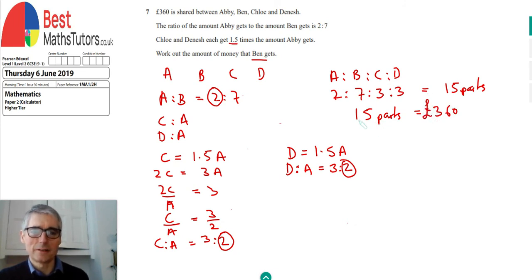And we can then find out what one part is worth, because that's always the key, to find out what one part is worth first. So we find one part by dividing both sides by 15, so that the 15 disappears on the left-hand side. And we get 360 divided by 15, which is 24. So it's a calculator paper, so you can just do that on the calculator. 360 divided by 15.